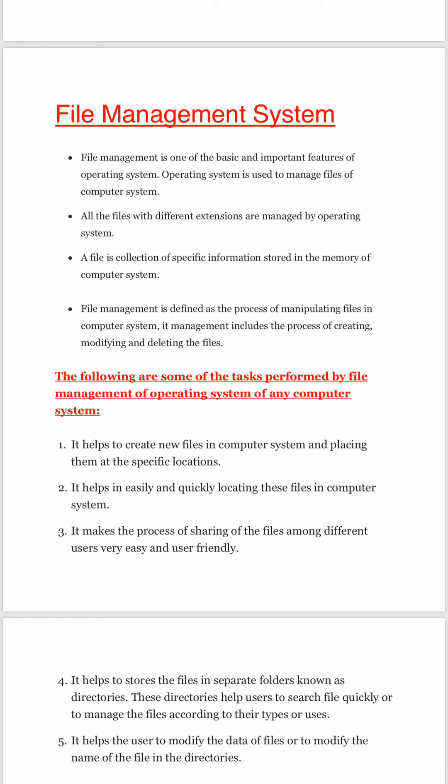If all files are in one folder, it will be difficult to access them and more time-consuming. The operating system divides the files into different folders. Some data is in one folder, some data is in another. We call these folders directories. These directories help users to search files quickly and manage files according to their types. If you go to directory A, you get data from directory A — you don't need to access directory B. This division saves time, which means efficiency will increase.